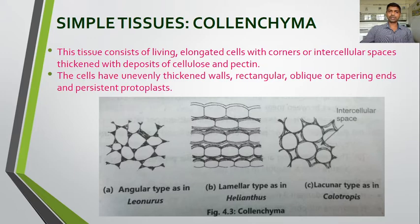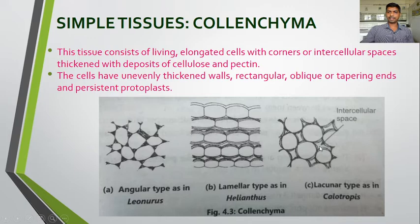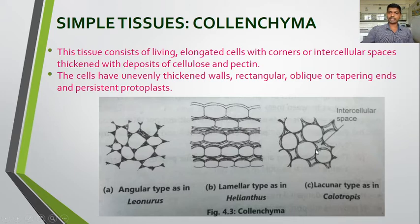Here different examples of collenchyma are given. In the case of Helianthus, the laminar type of collenchyma is seen — layers one above the other form the laminar collenchyma. The lacunar type is seen in Calotropis — here lacuna means the empty space where there is no deposition of cellulose and pectin, or which is not completely filled. While in the angular type, as in Leonurus, the intercellular spaces are completely filled with the deposition of cellulose and pectin.